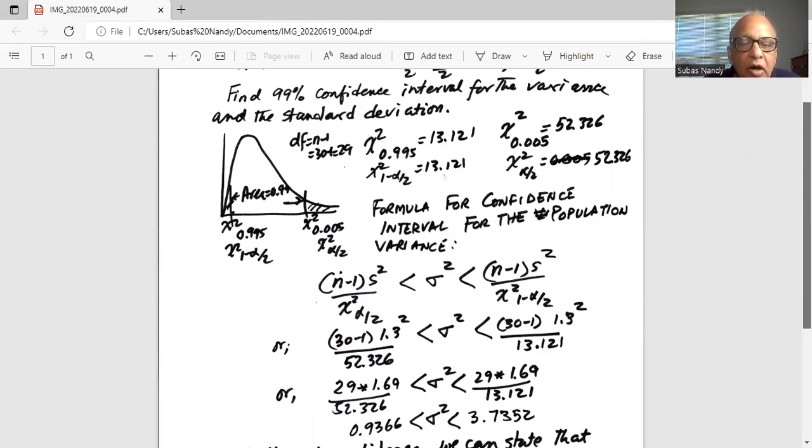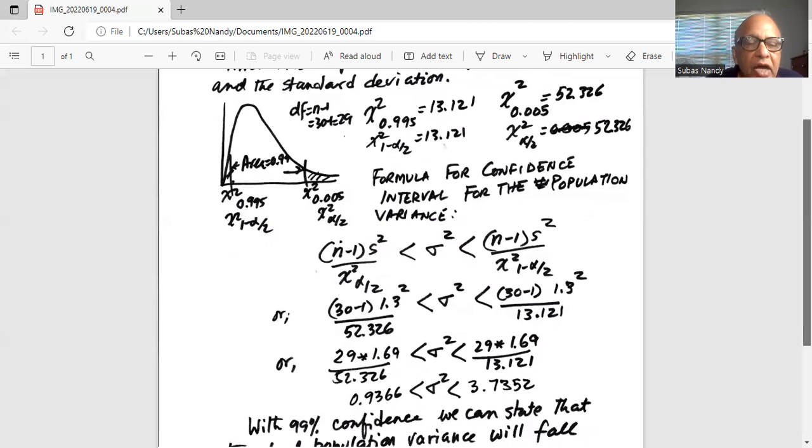So these are the two boundaries. The lower boundary is (n-1)s² divided by chi-square α/2, and the right boundary of the confidence interval for the variance is (n-1)s² divided by chi-square 1 minus α/2. So if we substitute the values...